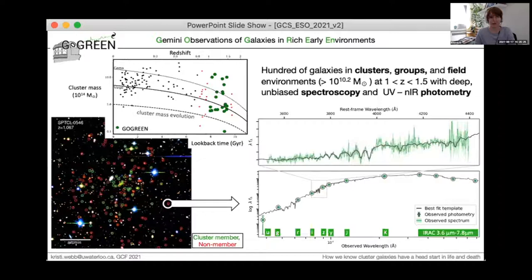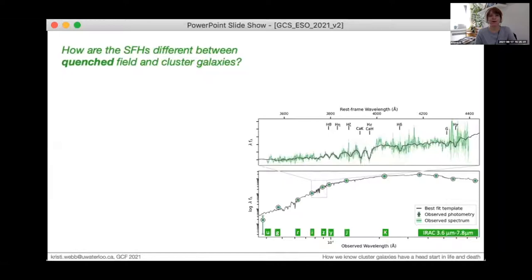For each of these galaxies, GoGreen has UV to near-IR photometry and deep unbiased rest frame optical spectroscopy, as shown in this example spectral energy distribution. It's with this data set that we're uniquely posed to answer the question of how are the star formation histories different between galaxies in clusters versus the field, particularly focusing on the quenched population.